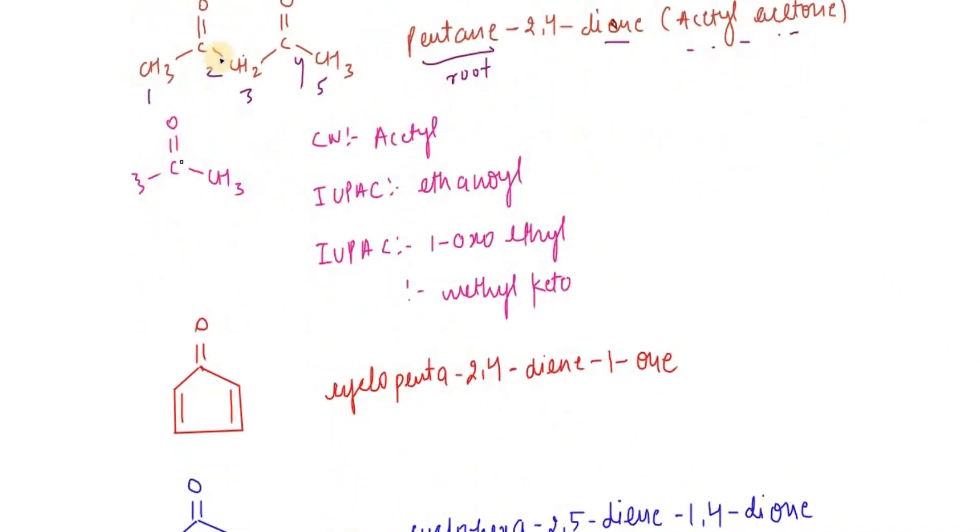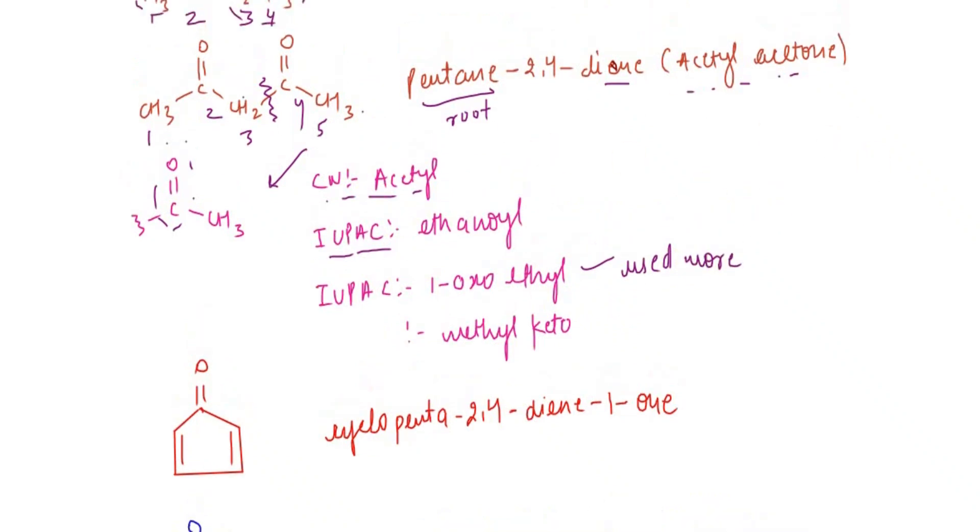Let's talk about this group. The common name is acetyl for this part and acetone for the ketone portion, so acetyl acetone. The IUPAC name is ethanoyl, and one-oxoethyl is also the name. Methyl ketone is a substituent name that is used more commonly, so that's how we can use it as a substituent.